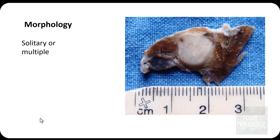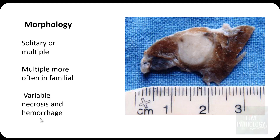Morphologically, medullary thyroid carcinomas can be solitary or multiple. They are most often found in the upper two-thirds of the lobes of the thyroid, because parafollicular cells are more concentrated there. When you see multiple medullary thyroid carcinomas, you should suspect familial medullary thyroid carcinoma. There can be variable amounts of necrosis and hemorrhage. If the tumor is less than one centimeter, it is called medullary microcarcinoma.